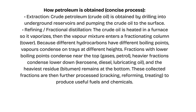How petroleum is obtained — concise process: Extraction: crude petroleum (crude oil) is obtained by drilling into underground reservoirs and pumping the crude oil to the surface. Refining / fractional distillation: the crude oil is heated in a furnace so it vaporizes, then the vapor mixture enters a fractionating column (tower). Because different hydrocarbons have different boiling points, vapors condense on trays at different heights.